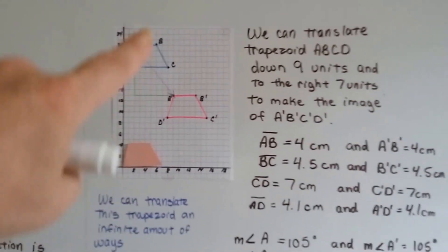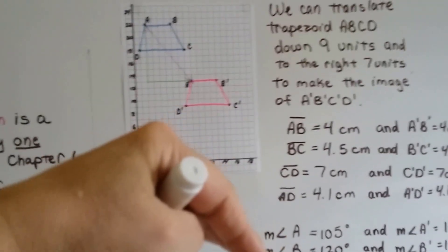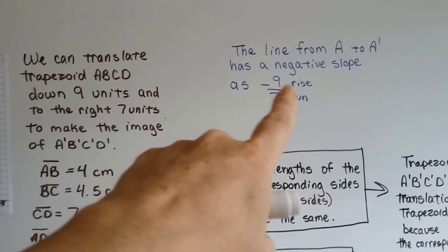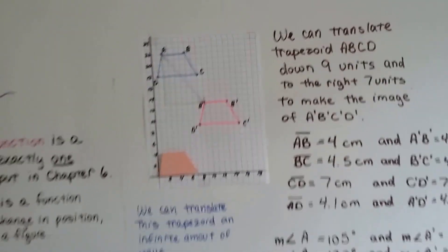Can you see that this is a negative line because it's coming down? Remember we did that in the last chapter. It would have a negative nine rise over a seven run. It would go down nine and over seven.